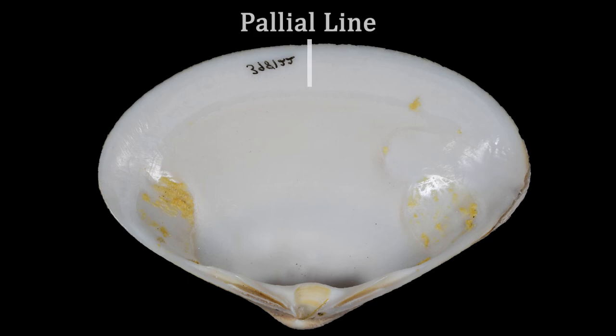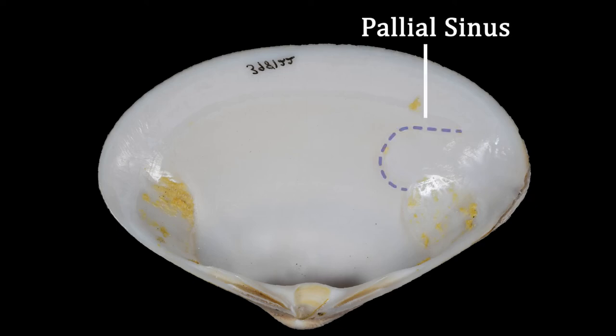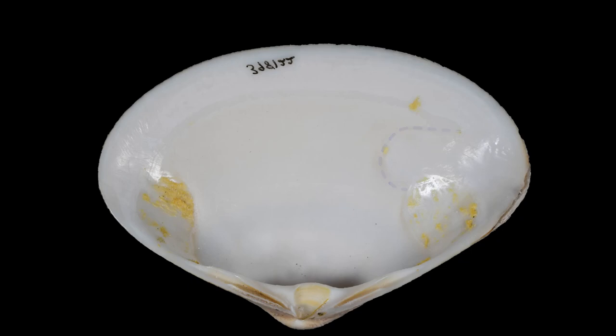The next part I want to talk about are the paleo line and paleo sinus. You can often tell where the paleo line is because there's a slight discoloration on this part of the shell. The paleo line marks the furthest point of the shell that the soft body of the bivalve was actually attached to. Now some animals will have what's called a paleo sinus. The paleo sinus marks where the bivalve siphon muscles attach to the shell. The size of the paleo sinus is often correlated to the size of the siphon in the living bivalve, so if you see a very large and deep paleo sinus, that animal probably had a really large siphon.